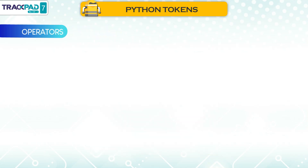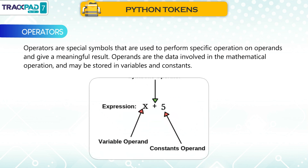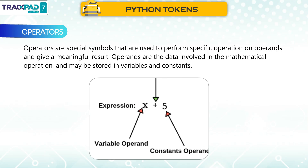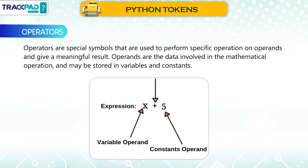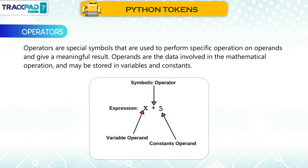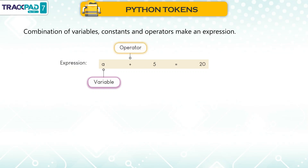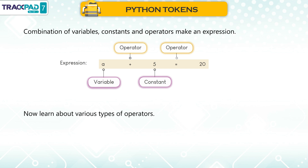Operators are special symbols that are used to perform specific operations on operands and give a meaningful result. Operands are the data involved in the mathematical operation and may be stored in variables and constants. A combination of variables, constants, and operators makes an expression. For example: A + 5 = 20, where A is a variable, + is an operator, 5 is a constant, and = is an operator.